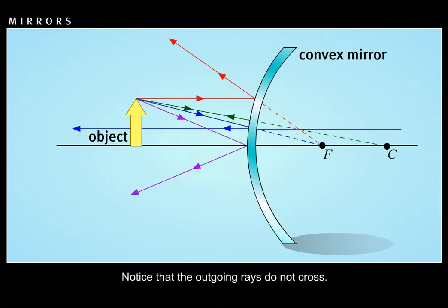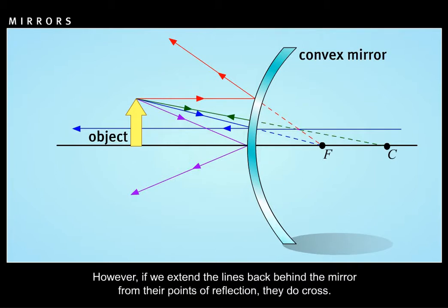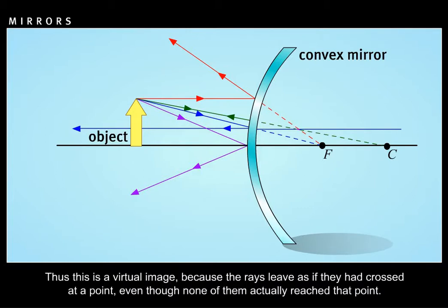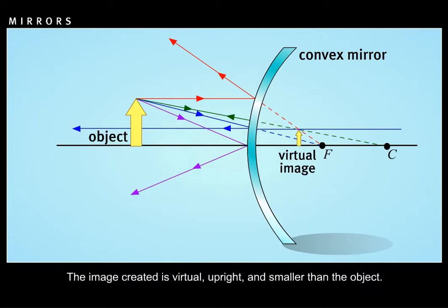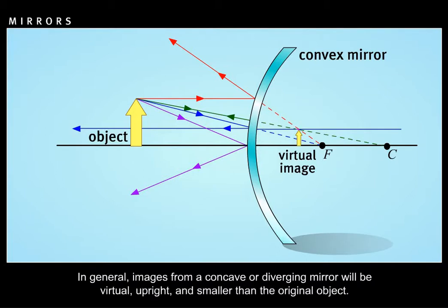Notice that the outgoing rays do not cross. However, if we extend the lines back behind the mirror from their points of reflection, they do cross. Thus, this is a virtual image, because the rays leave as if they had crossed at a point, even though none of them actually reached that point. The image created is virtual, upright, and smaller than the object. In general, images from a convex or diverging mirror will be virtual, upright, and smaller than the original object.